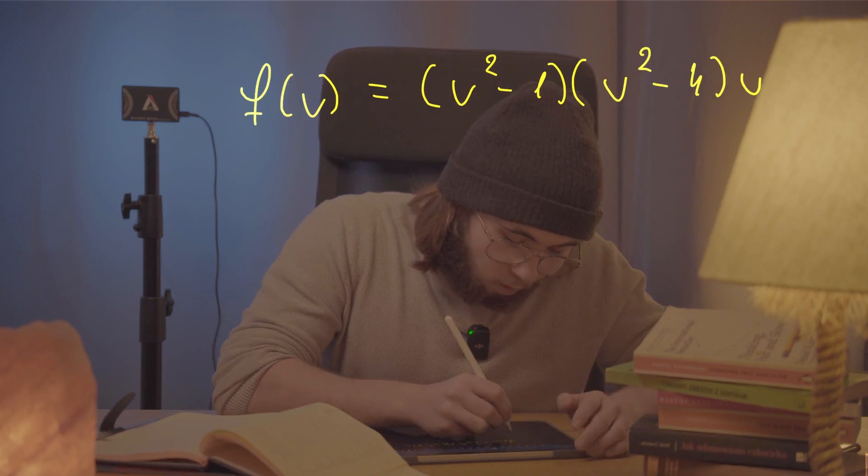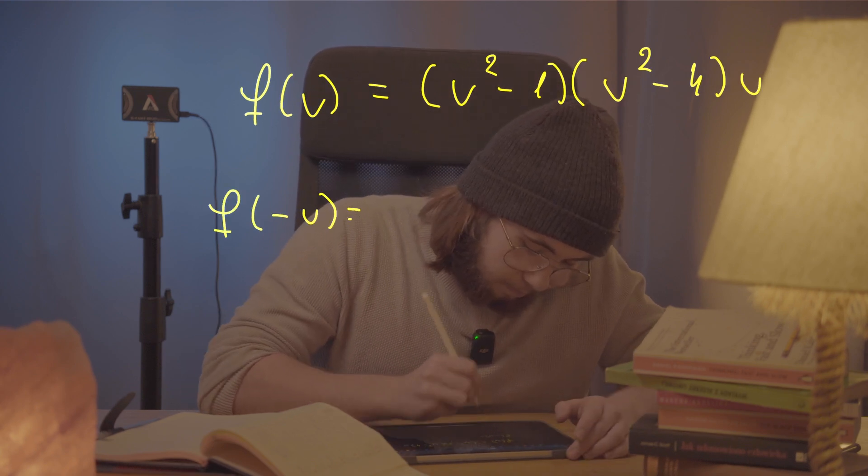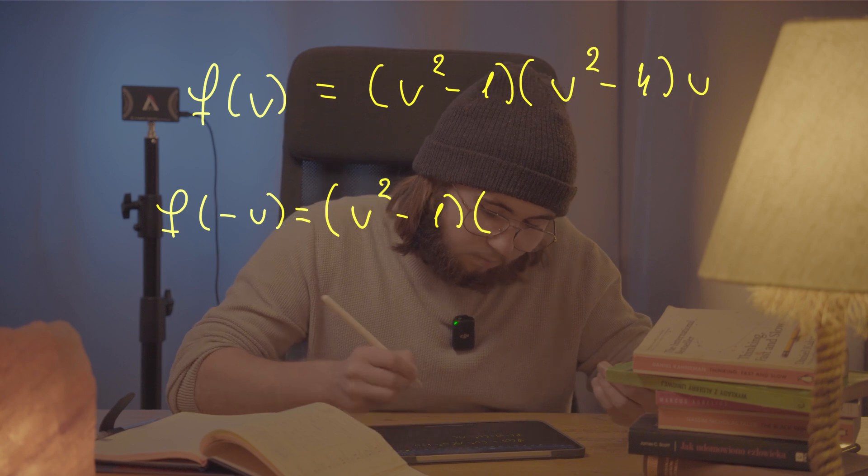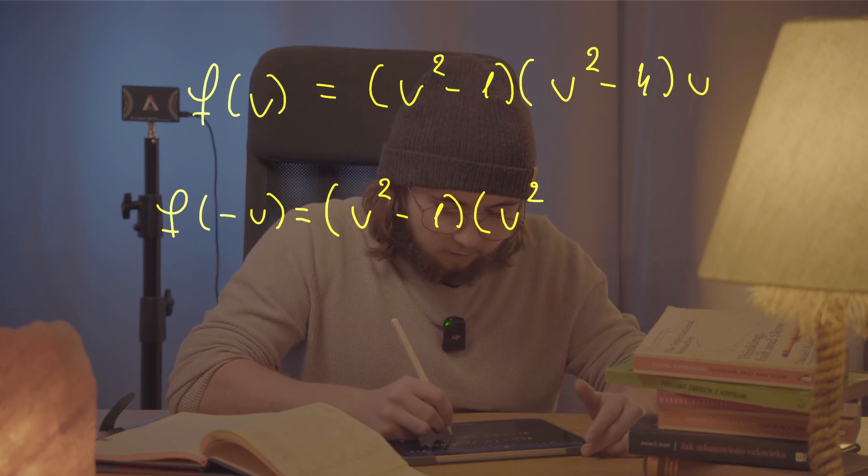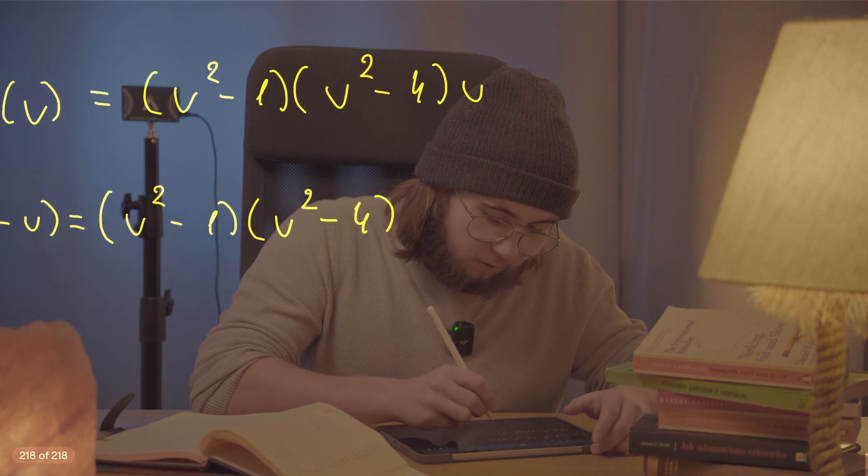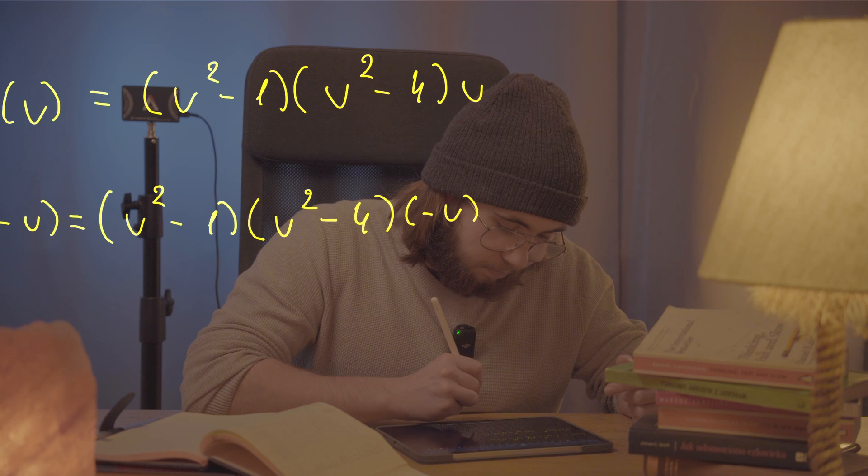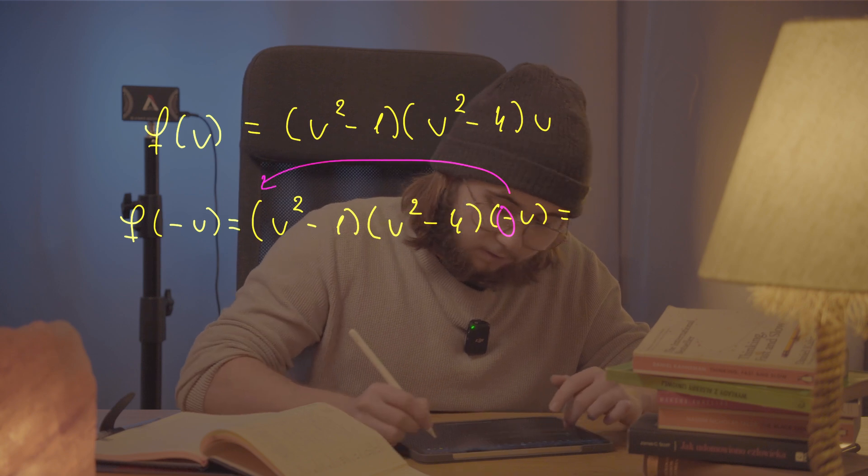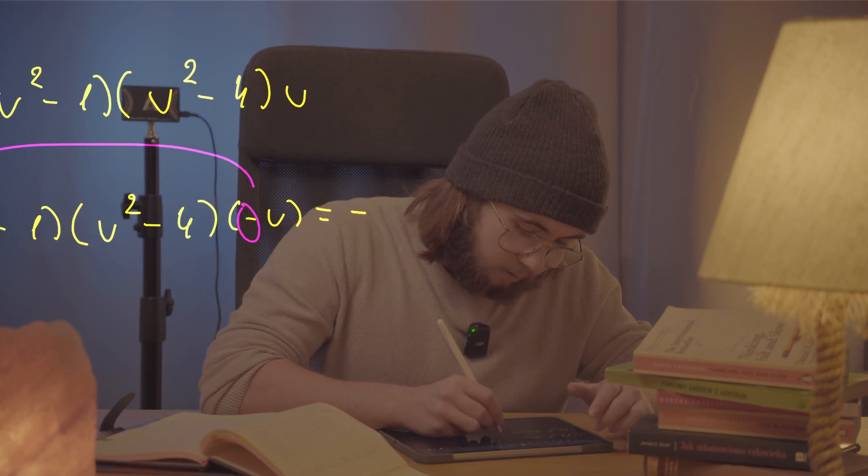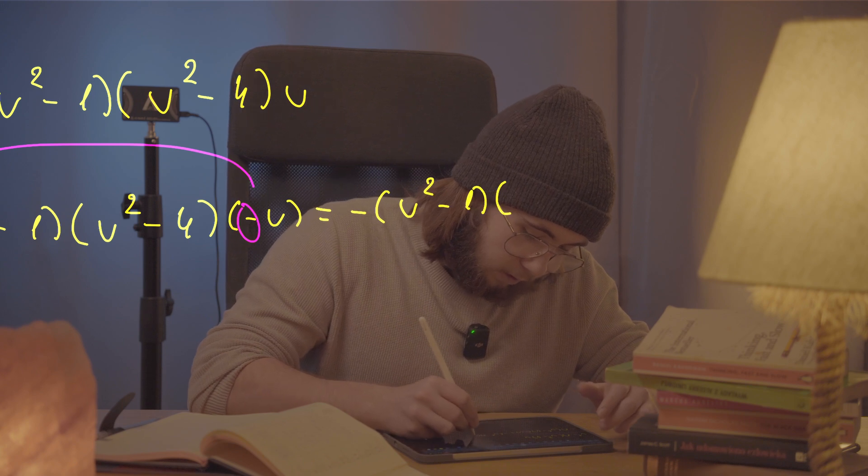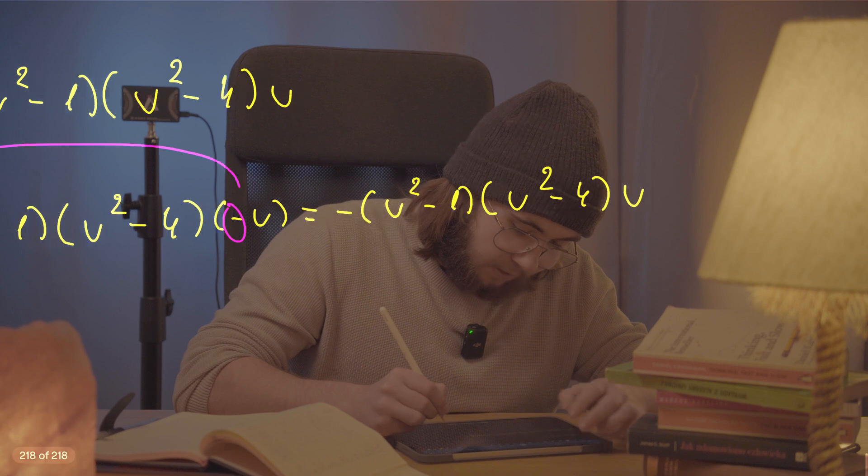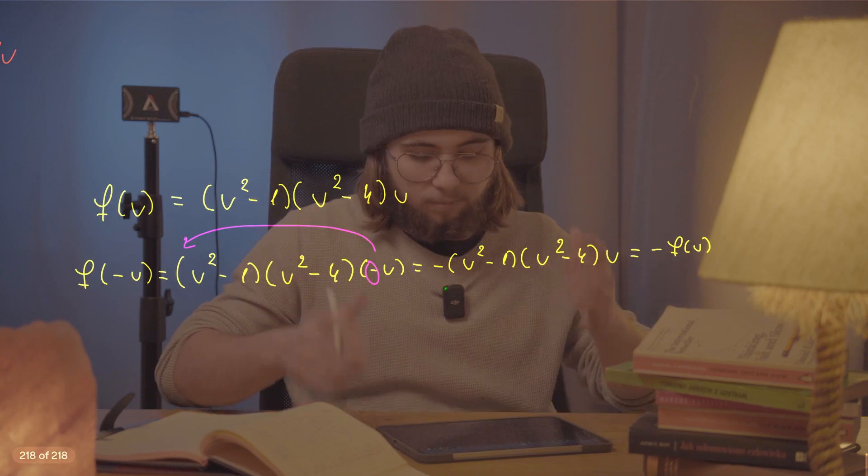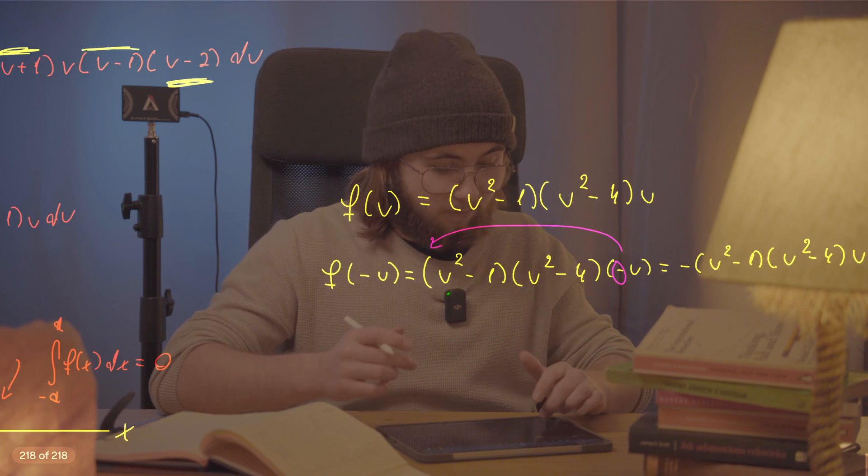What is f of negative u? Well, negative u squared is the same as u squared, so I'm just gonna leave it like that. Here as well, negative u squared is the same as u squared, so I'm gonna leave it like that. And now, negative u, I mean, this u changes to negative u, so we've got something like this. But this thing is equal to, I can just pull this negative sign in front of this entire thing, and just be left with, basically, negative, u squared minus one, u squared minus four times u. But this thing is the same as just saying that I'm negating f of u in the first place, multiplying f of u by negative one in the first place.